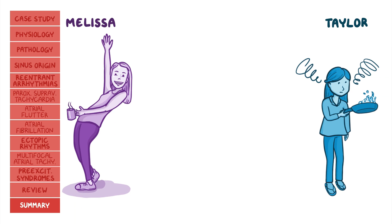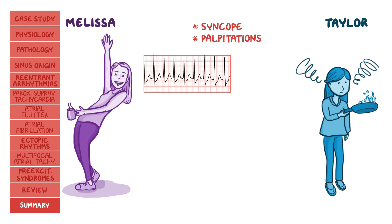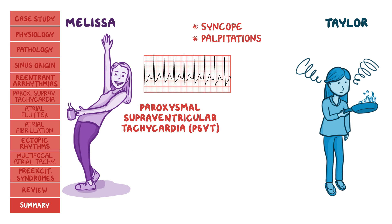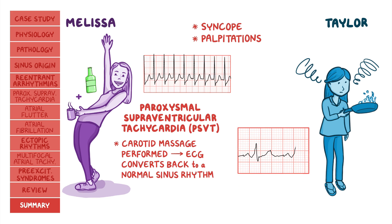Back to our cases. Both Melissa and Taylor's presentations describe syncope and palpitations, suggesting something is going on with their hearts. Based on Melissa's ECG, this is likely paroxysmal supraventricular tachycardia or PSVT, likely triggered by her consumption of alcohol and caffeine. After a carotid massage is performed, her ECG converts back to a normal sinus rhythm. On the other hand, Taylor's ECG shows a short PR interval and a wide QRS complex with an initial delta wave, which is the classic ECG pattern of Wolff-Parkinson-White syndrome.